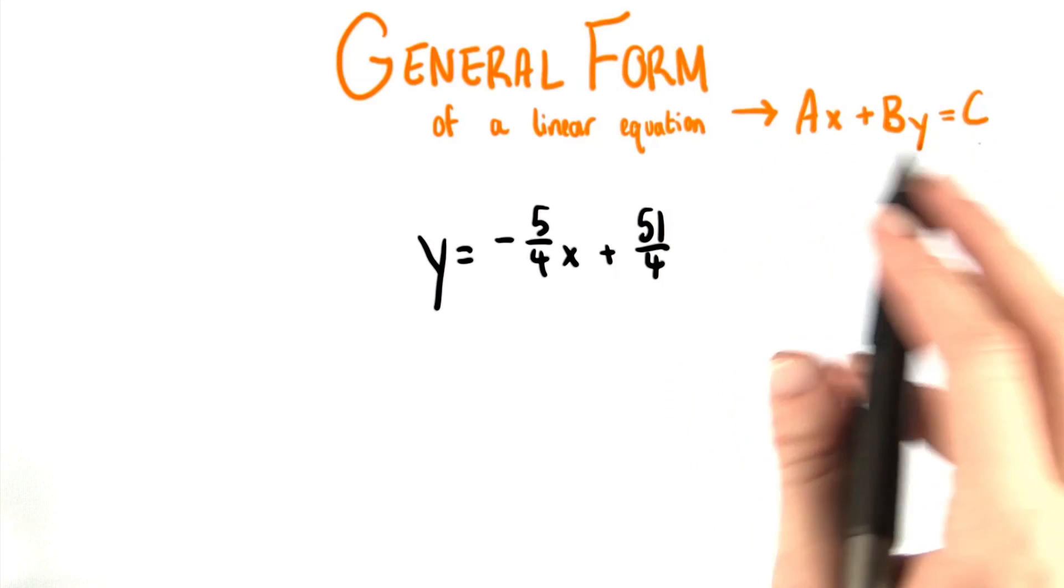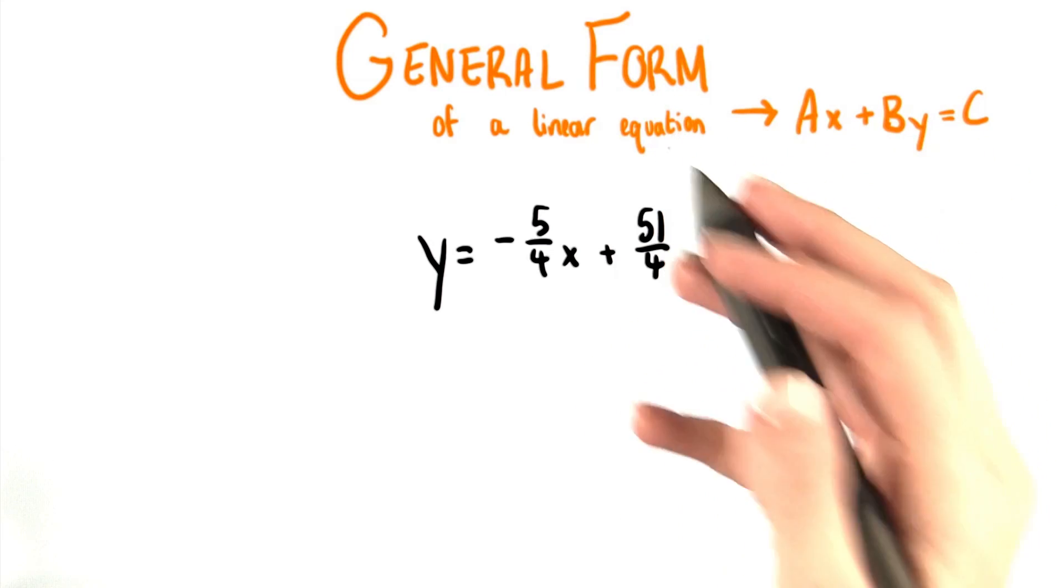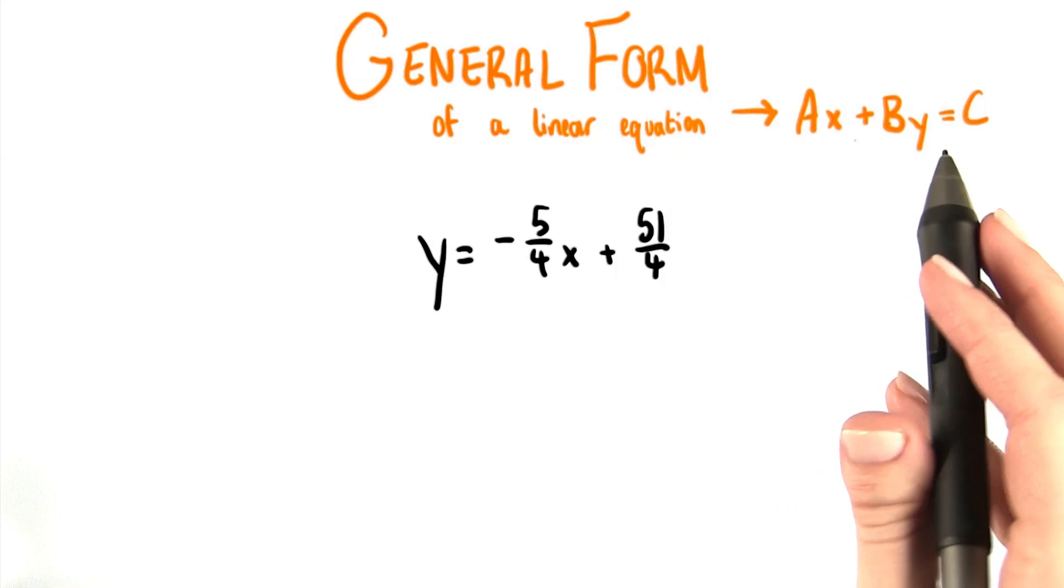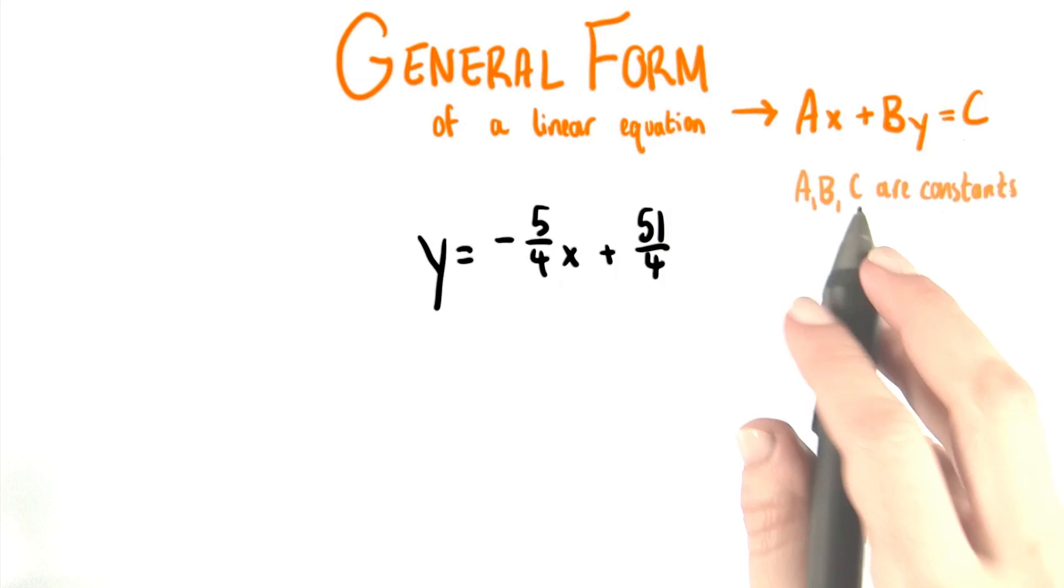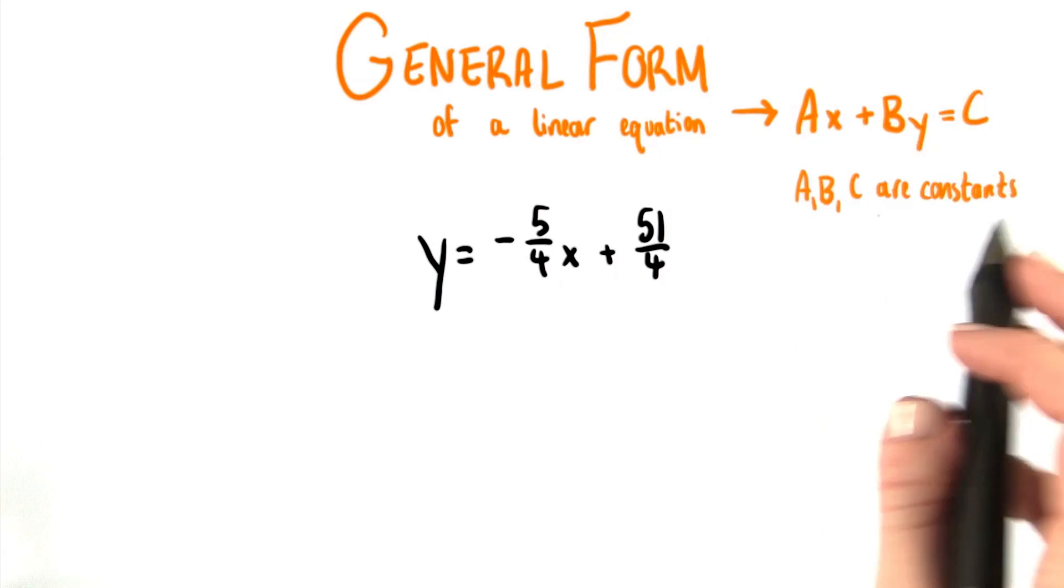We can write the general form for linear equations as Ax plus By equals C, where A, B, and C are all constants.